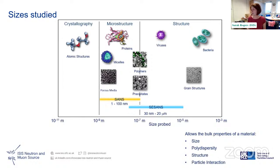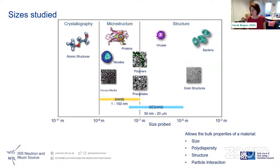C-SANS really kicks in where we can start to look at viruses, some grain structures — that's the overlap between classical diffraction, SANS, and spin echo SANS. So we cover quite a broad range of sizes. Typically we look at bulk properties: structure, size, polydispersity, and particle interaction.